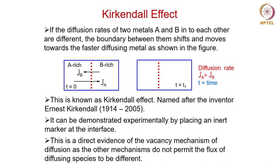There is a phenomenon called the Kirkendall effect, which is actually a direct evidence of the vacancy mechanism. For example, if you keep two metals A and B together, the boundary between them will shift and move towards the faster diffusing metal, as shown in the figure. This is known as the Kirkendall effect, named after its inventor Ernest Kirkendall. This can be demonstrated experimentally by placing an inert marker at the interface and monitoring the movement of the marker, which indicates the direction in which atoms are moving.